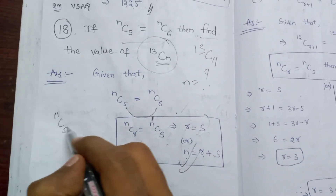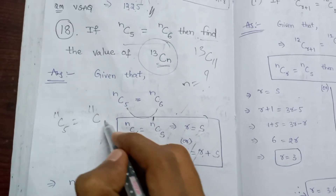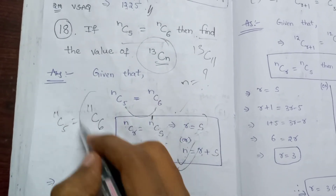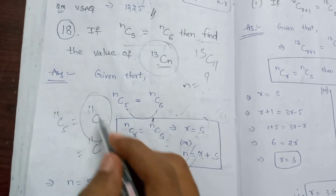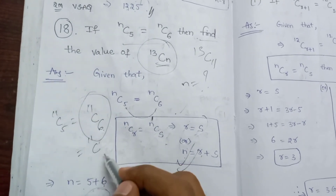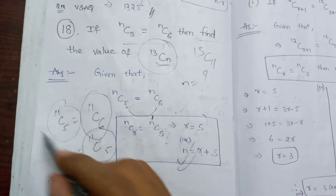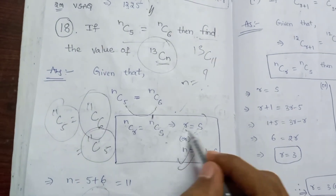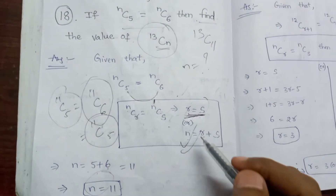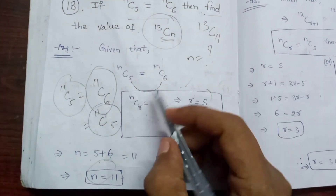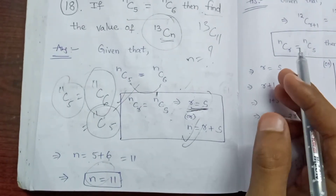We will verify this using the formula. We can write 11C5 is equal to 11C6, which satisfies the given condition nC5 equals nC6.